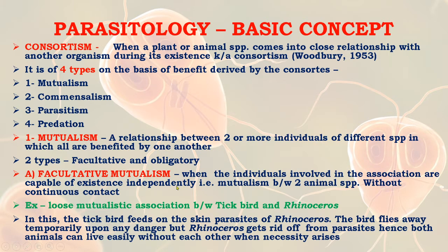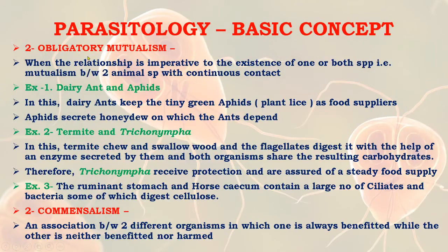An example of facultative mutualism is the loose mutualistic association between the tick bird and rhinoceros. The tick bird feeds on the skin parasites of the rhinoceros, and the bird flies away temporarily upon any danger, but the rhinoceros gets rid of the parasites. Therefore, both animals can live easily without each other when necessity arises.